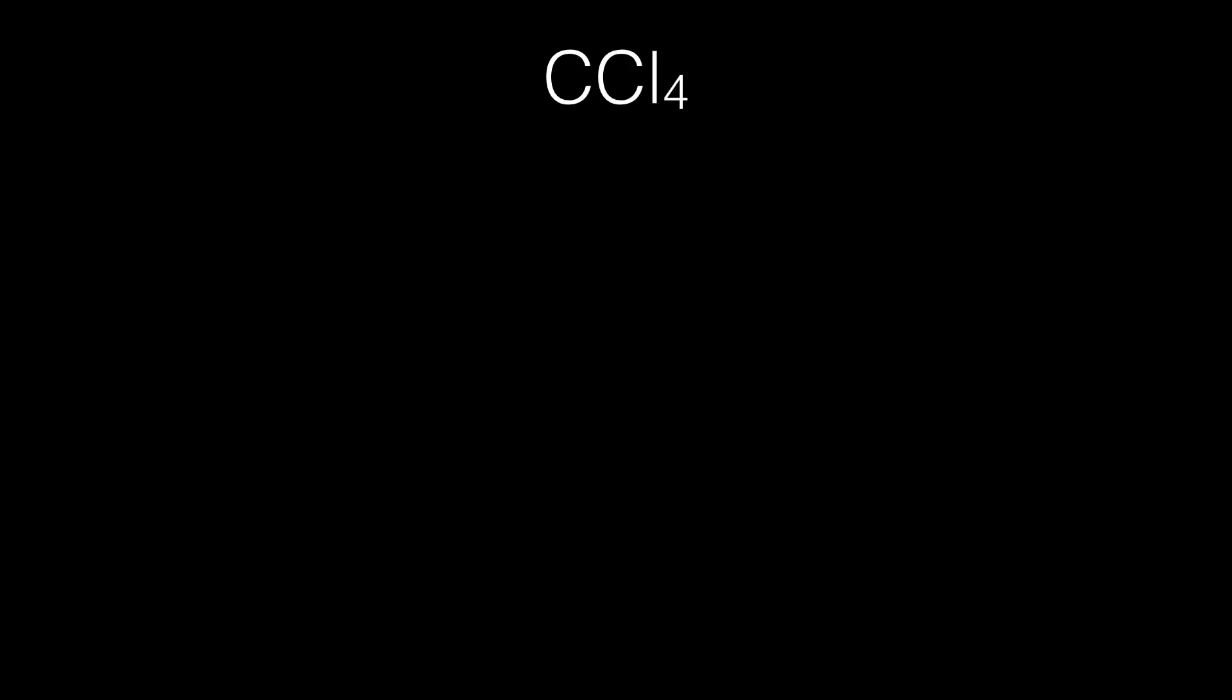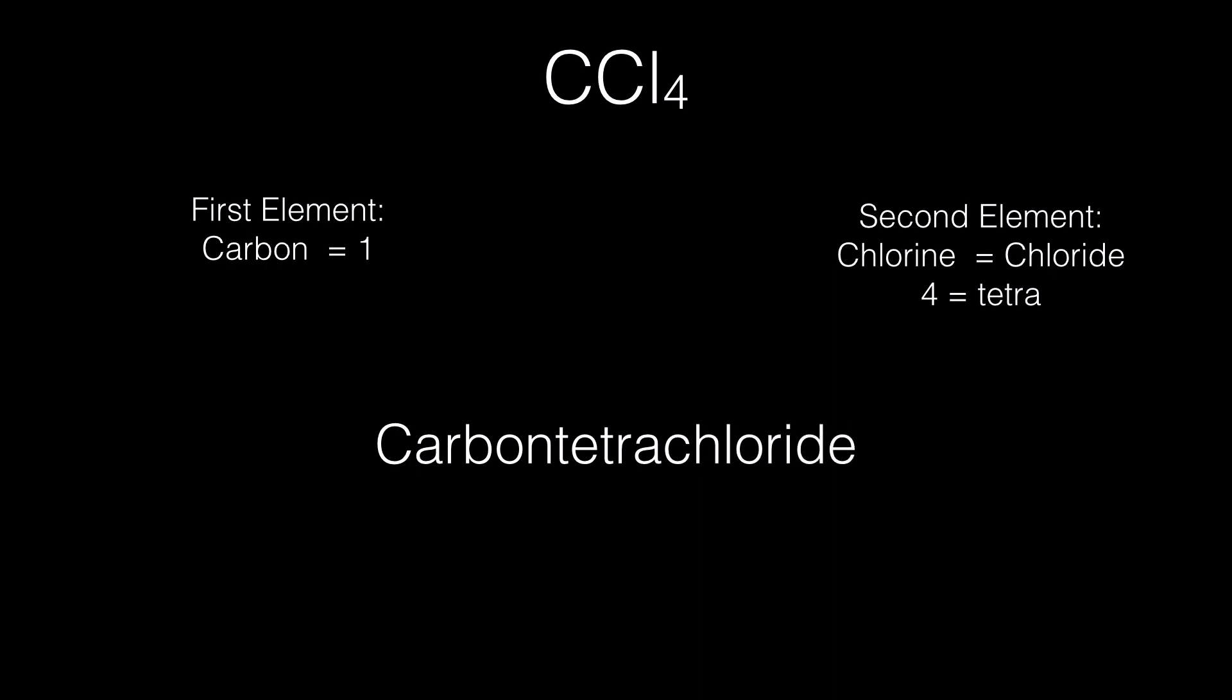In the next example we have one carbon and four chlorines. Four is tetra. Chlorine is a second element, therefore the naming changes to -ide or tetrachloride, so the final name becomes carbon tetrachloride.